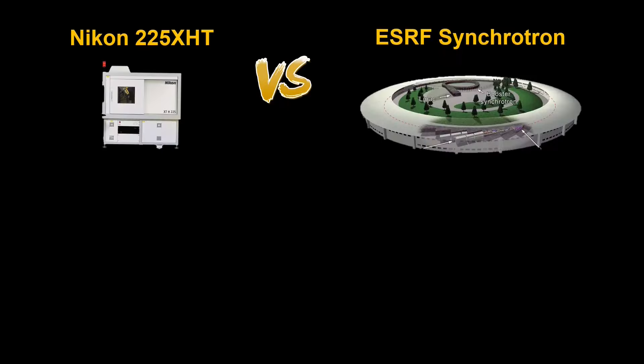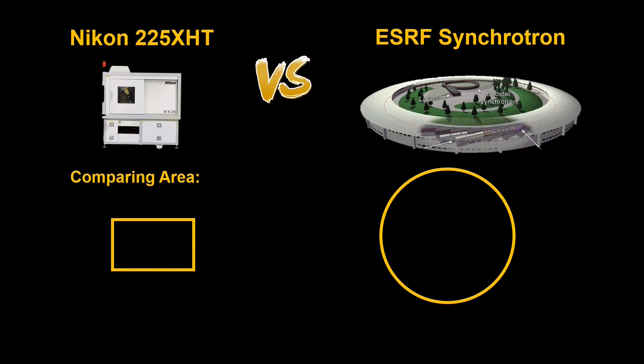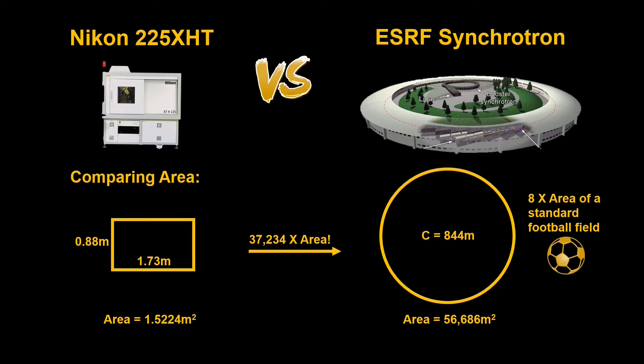Okay so today we're going to be comparing the Nikon versus the ESRF synchrotron just to wrap our heads around how large the synchrotron is. So at first maybe we want to compare the area or the footprint that each of them makes. The Nikon is just a large rectangle and the synchrotron footprint is this giant circle. And so if we measure these out and we calculate the area of each, we see that the area of the synchrotron is 37,234 times the area of the Nikon. Just to put that into perspective, the same size as eight standard football fields. With that in mind, is the synchrotron just 37,000 times better? Well it's not a really fair comparison to just look at the size.